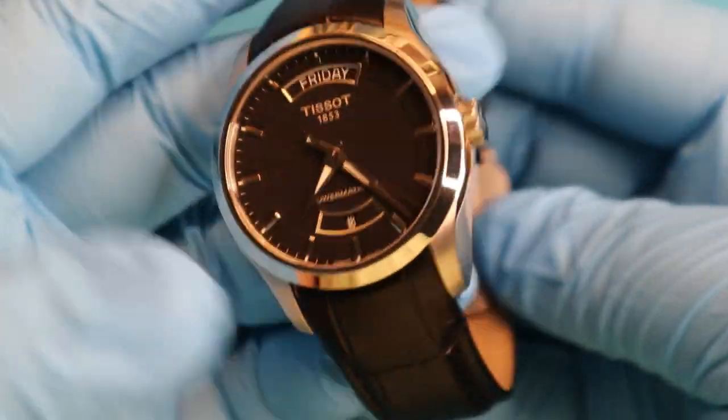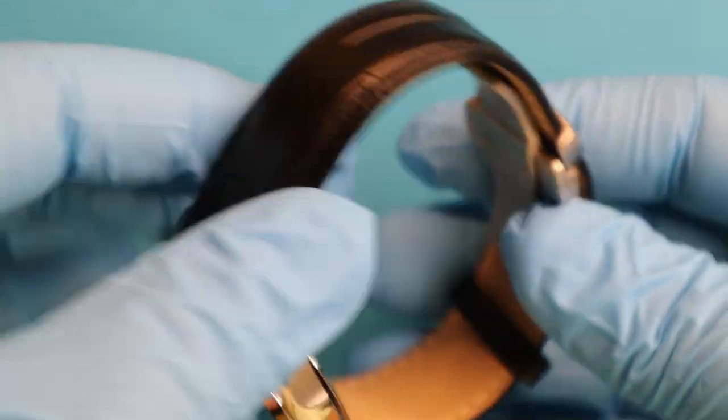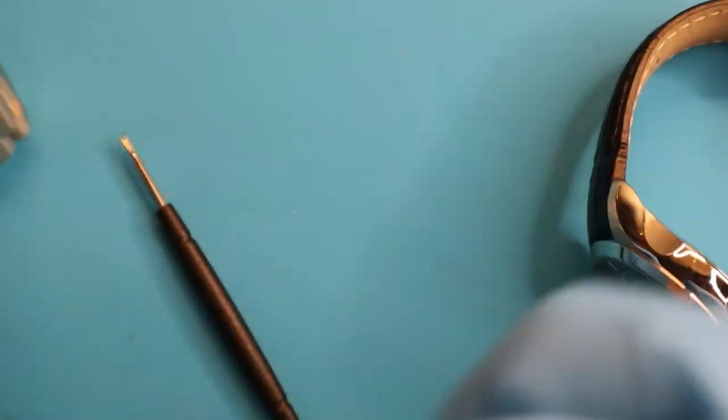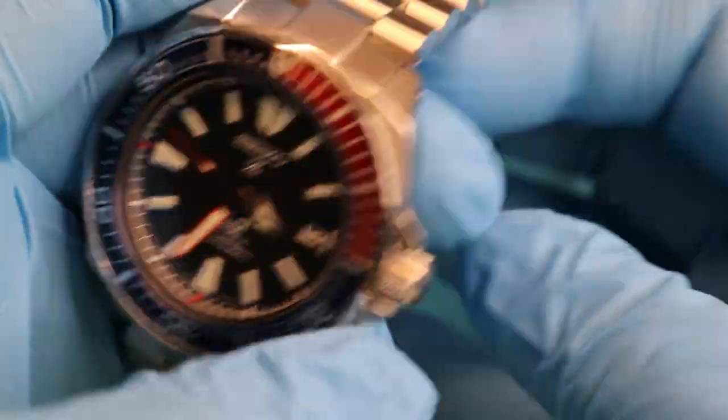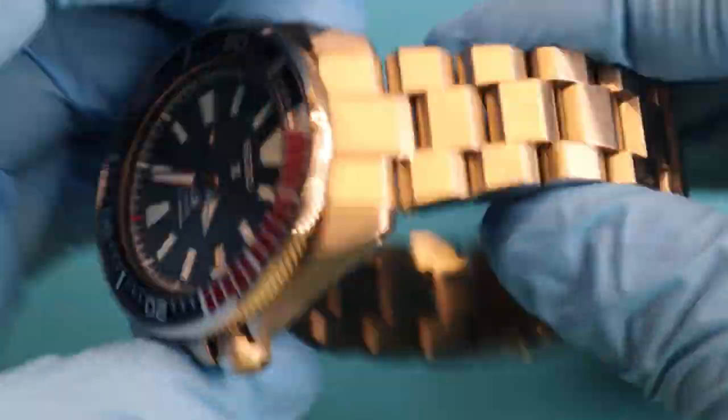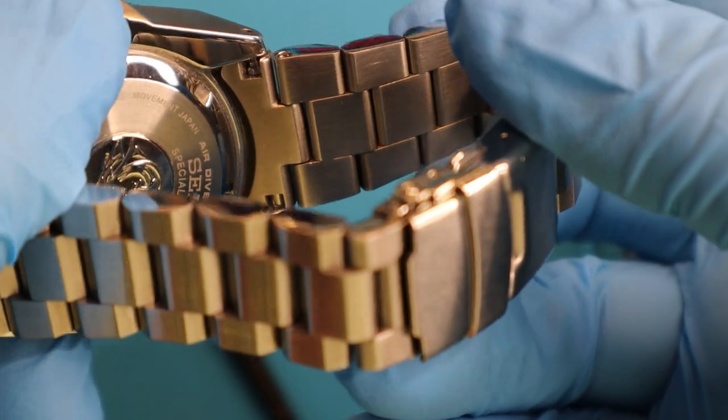I'll show you on two different types of watches. Here I've got a Tissot, this has got a leather band, and then I've got a Seiko Prospekt here that has a stainless linked band.